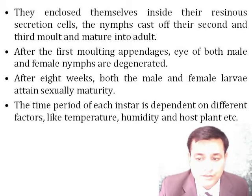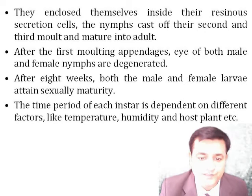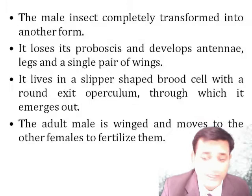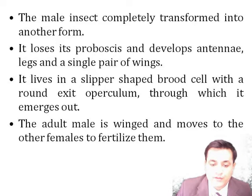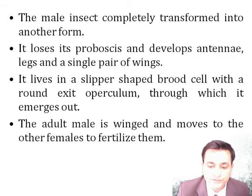Each instar is dependent on different factors like temperature, humidity, and host plants. The male insect completely transforms into another form; it loses its proboscis and develops antennae, legs, and a single pair of wings. The male lives in a slipper-shaped brood cell with an exit called operculum, through which it emerges. The adult male is winged and moves towards females to fertilize them. The female retains her mouthparts but is without wings, eyes, or appendages.